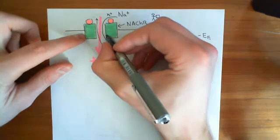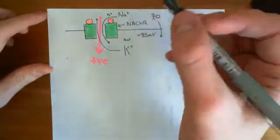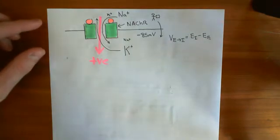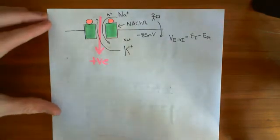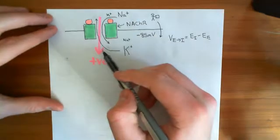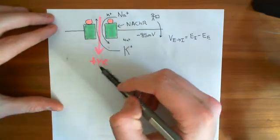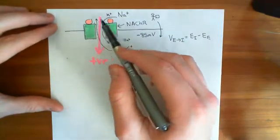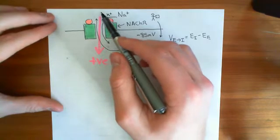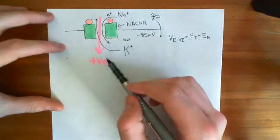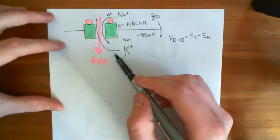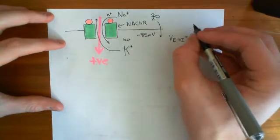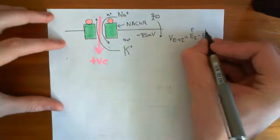When those acetylcholine molecules bind, it causes the opening of this channel, which overall allows positive charge into the cell. The movement of positive charge into the cell raises the electrical potential of the intracellular compartment and lowers the electrical potential of the extracellular compartment, because you are moving positive charge out of the extracellular compartment and into the intracellular compartment. So the intracellular electrical potential gets bigger, and the extracellular one gets smaller.